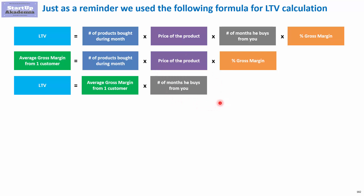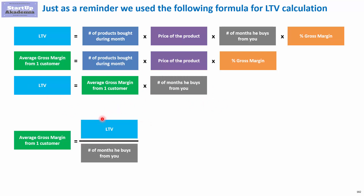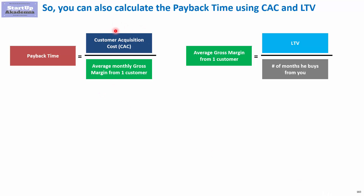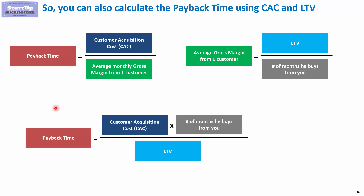This means we can rearrange that equation and calculate the average gross margin from one customer — we simply get the lifetime value divided by number of months he buys from us. Now, let's plug that into the payback formula. The payback formula says we take the customer acquisition cost divided by the average monthly gross margin from one customer. And since average gross margin from one customer equals lifetime value divided by number of months he buys from us, we can calculate payback time using customer acquisition cost, lifetime value, and number of months he buys from us.